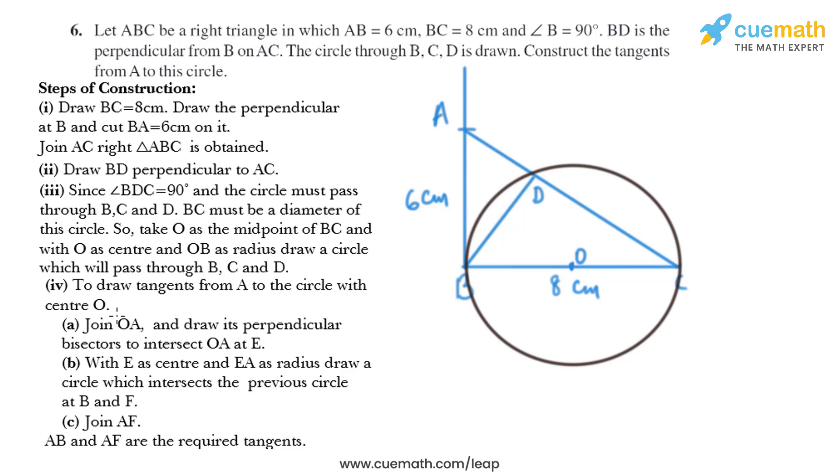Now let's move on to the next step. Draw tangents from A to the circle with center O. Join OA and draw its perpendicular bisector to intersect OA at E. So first of all we need to join OA, then we need to draw its perpendicular bisector. We'll draw the perpendicular bisector of OA and name the point of intersection as E.